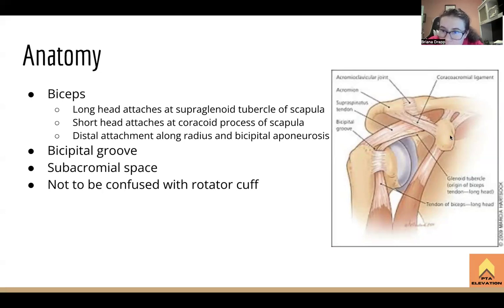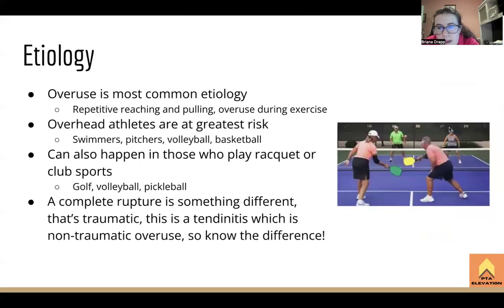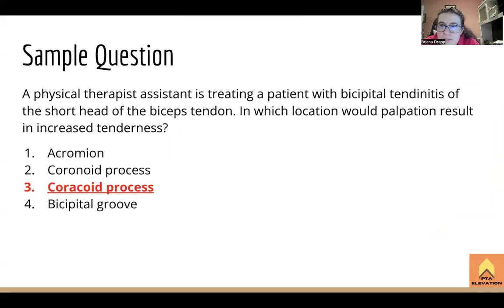The short head of the biceps originates at the coracoid process of the scapula, so that's where increased tenderness would be found when it's the short head that's involved. The acromion might be uncomfortable if you push on it but nothing from the biceps actually attaches there. Know your anatomy — and when asked what's more important, knowing anatomy or knowing pathology, the answer is knowing how the anatomy affects the pathology and how the pathology relates back to a deficit in the anatomy. You need to know both.